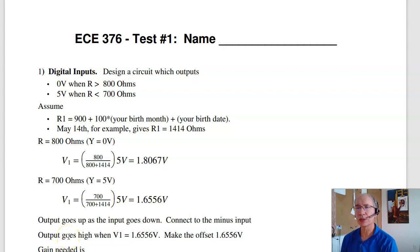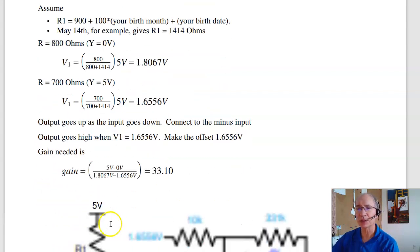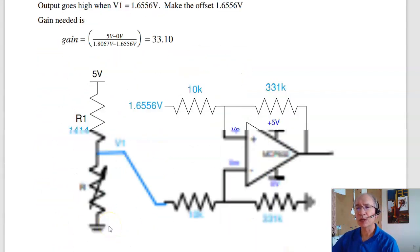Here are solutions to test number one for ECE 376 embedded systems. Now the first problem is to design a Schmitt trigger.